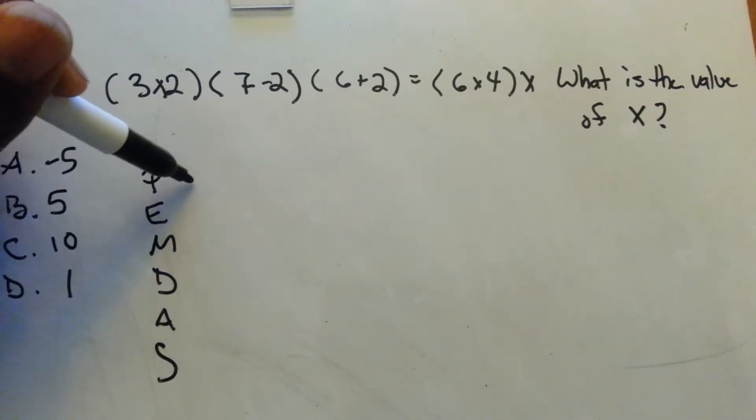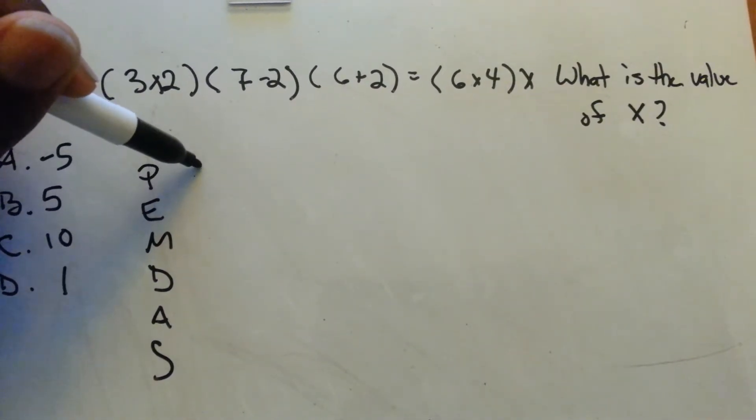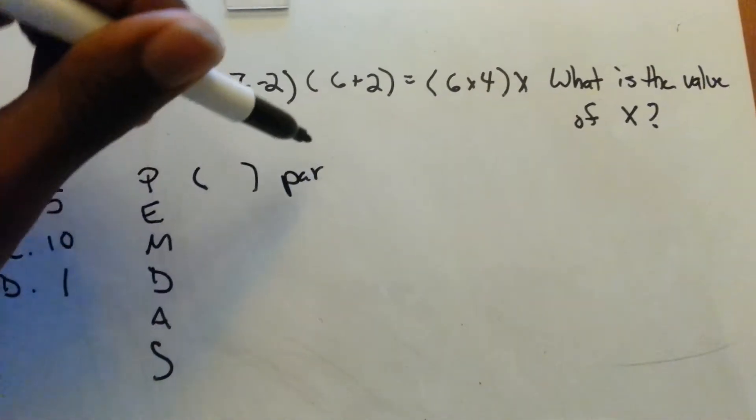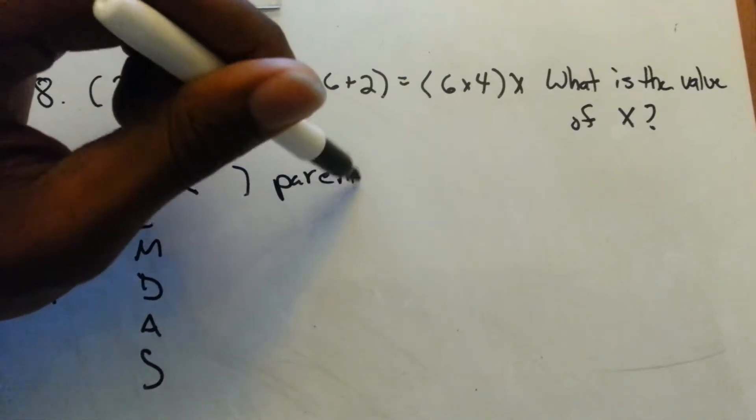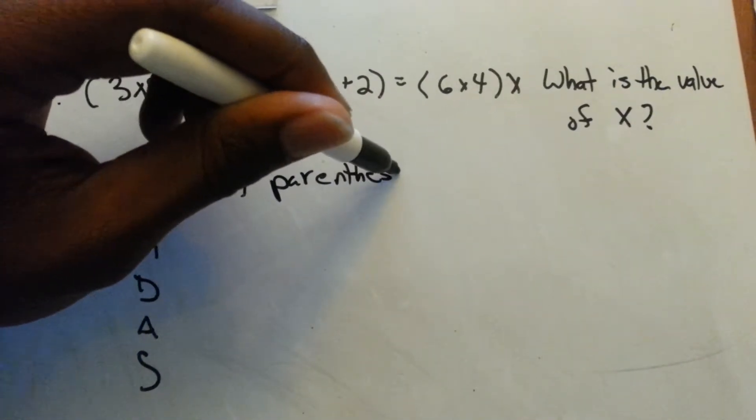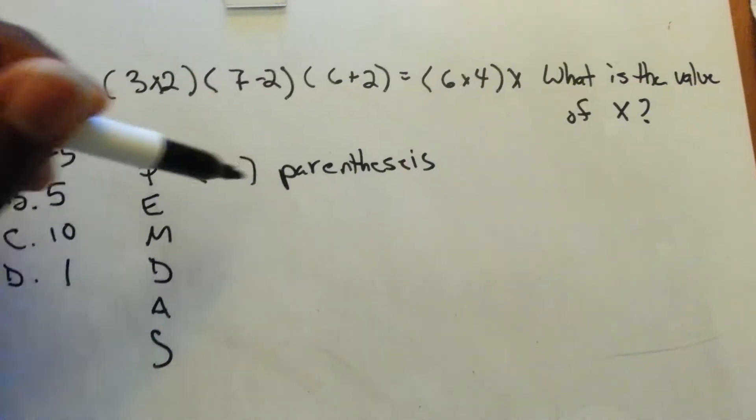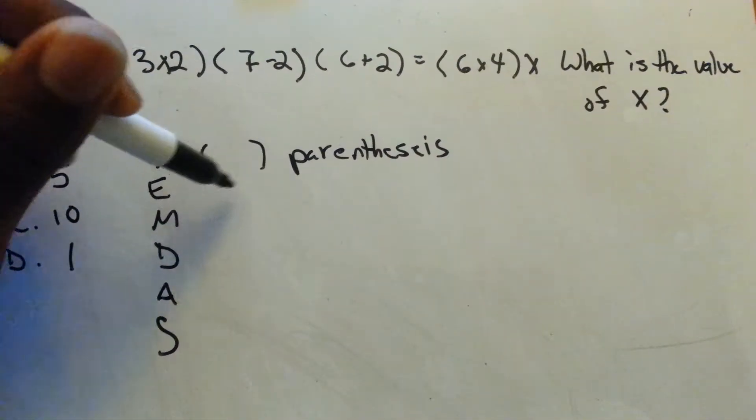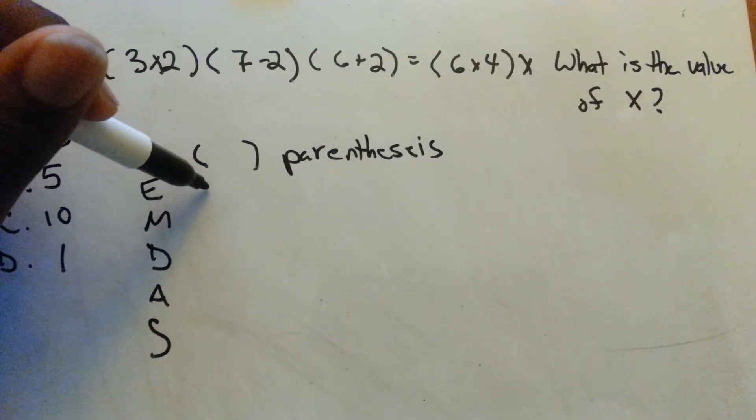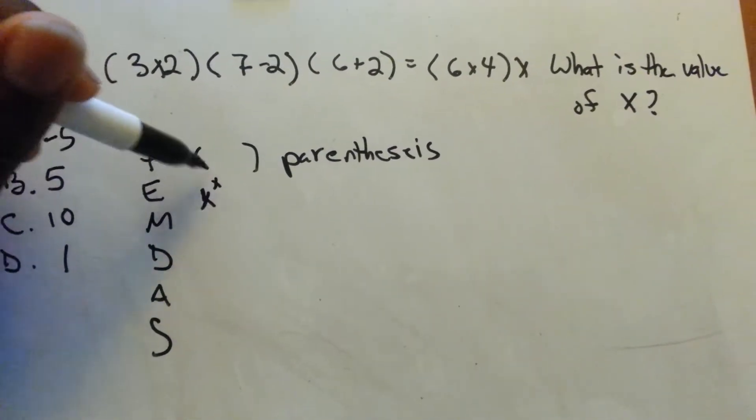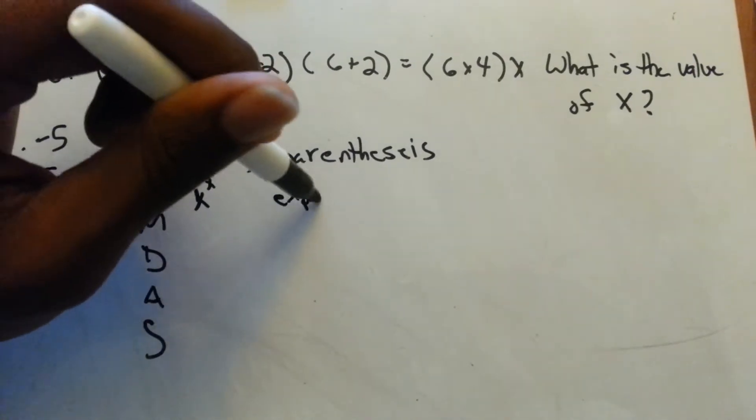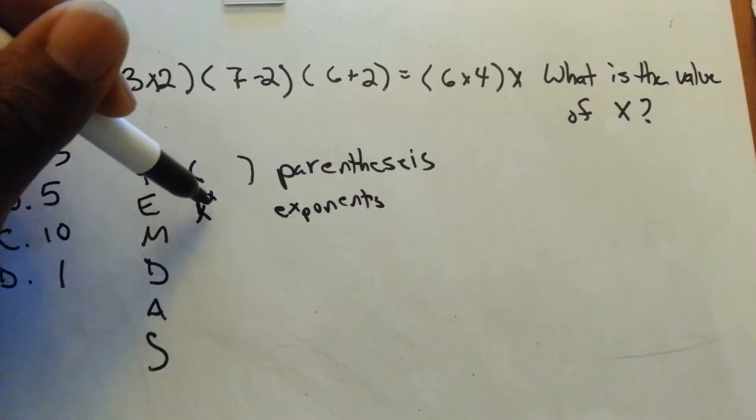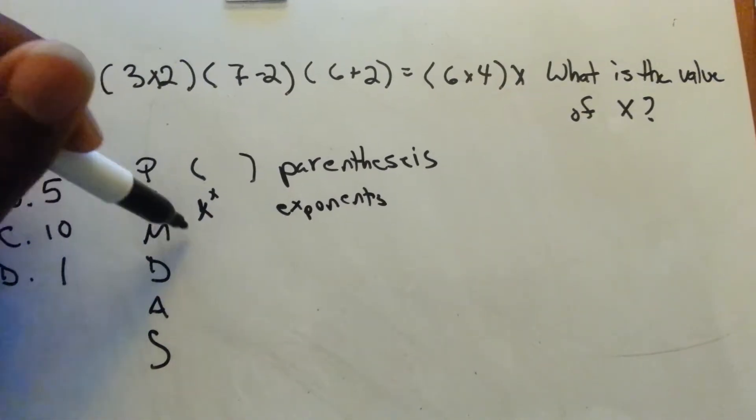So the first thing you want to do is the parentheses, what's inside the parentheses. I don't even know if I can spell it right. Parentheses, I don't know, but the little arches, little parentheses. Next is the exponents. If there's a number and it has a little number on top there, that's an exponent.